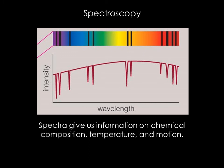In the previous chapter, we learned about how spectra are used to determine chemical composition, temperature, and motion. Spectroscopy is an important and frequently used tool for the astronomer.